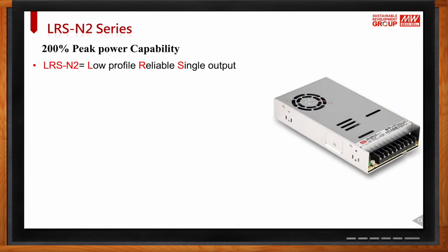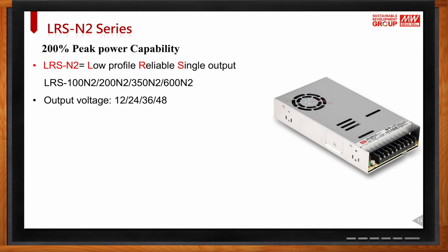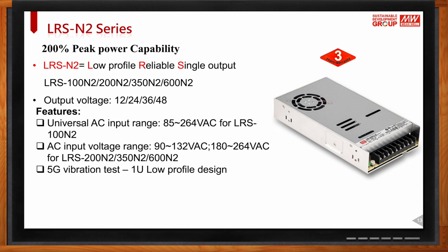The second series we offer is the LRS with 200% peak power capability — if you have 100W, in the first five seconds you can reach 200W. LRS stands for Low-profile Reliable Single-output power supply. We offer 100W, 200W, 350W, and 600W options with output voltages of 12V, 24V, 36V, and 48V. The LRS comes with a three-year warranty (compared to five years for the HRP) and has no PFC function, making it more economical.